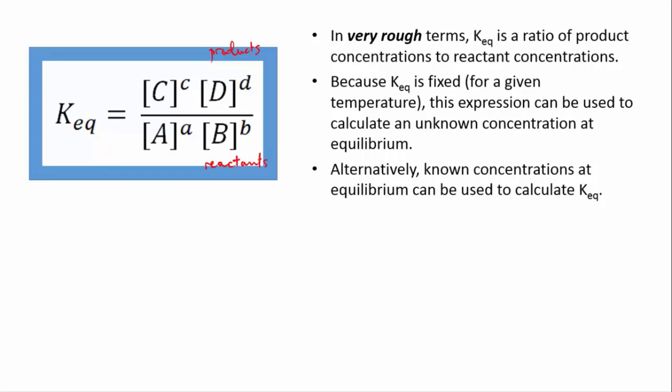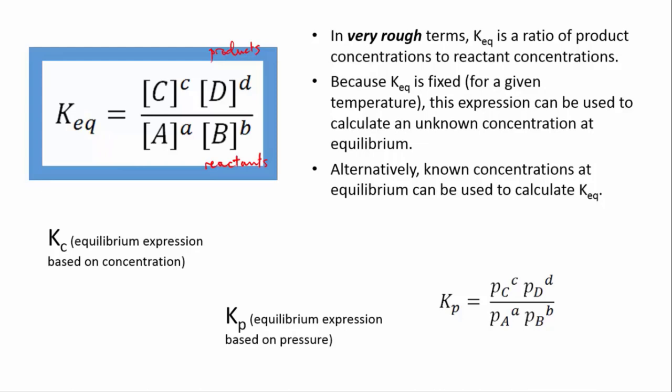Before we do, I need to point out some variations on Keq. The constant in the expression above is written Keq, with a subscript EQ for equilibrium. But it's sometimes referred to as Kc, where the C refers to concentration, and that's to indicate that that expression is written in terms of the concentrations of the species involved.